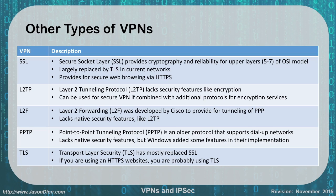SSL and TLS are both used for websites. SSL, or Secure Socket Layer, provides cryptography and reliability for upper layers — layers five through seven of the OSI model. SSL has been pretty much replaced by TLS in current networks, and it's used mostly for HTTPS web browsing. So if you go to Amazon to purchase a book and you go to their secure site, you're using SSL or TLS.